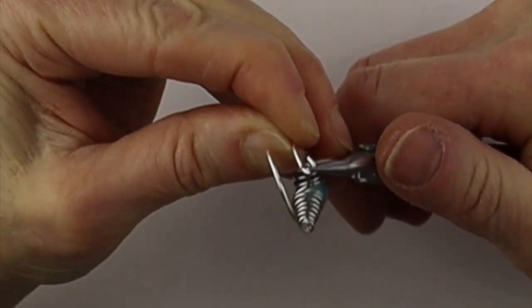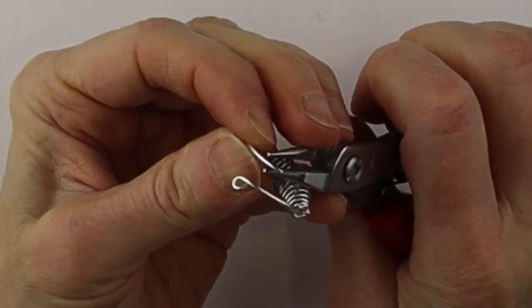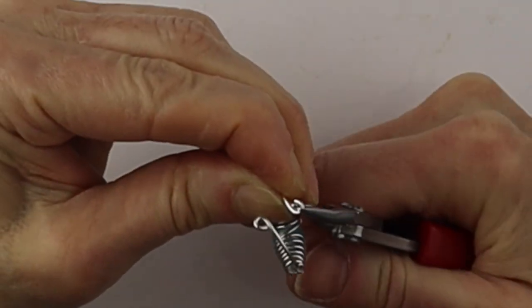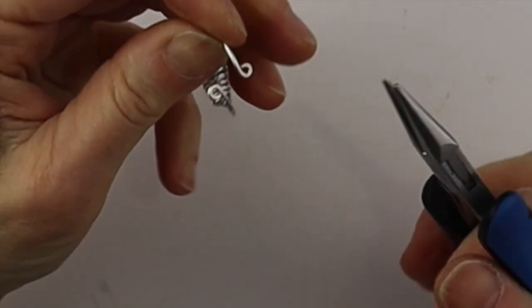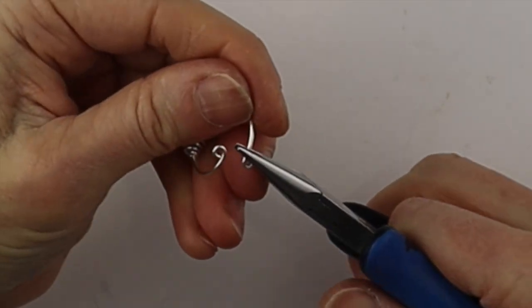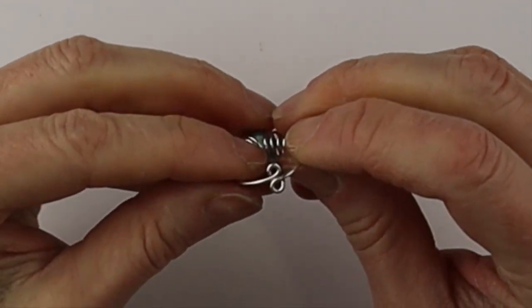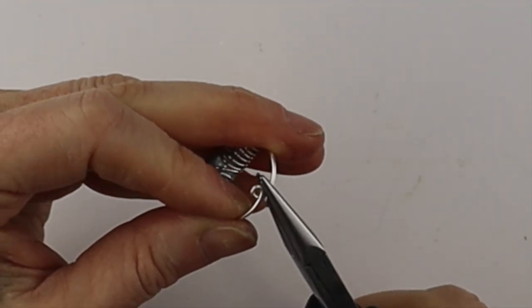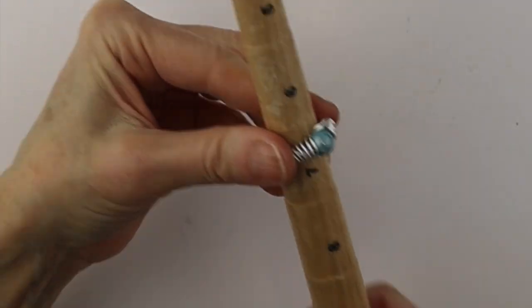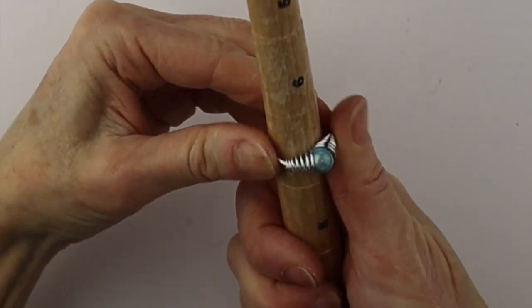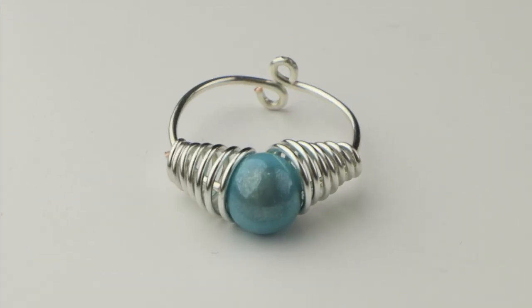And then take the end. Twist it with the round pliers. Flip it around and do the same on the other side. And pinch them so there's no pokey ends. Adjust them. Wiggle this around so the band connects at the back. Again use your flat pliers to do any adjustments. Put it back on the ring mandrel. Push it with your thumbs. And there you have the last one that is adjustable.